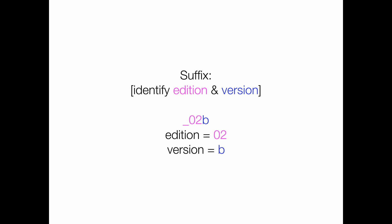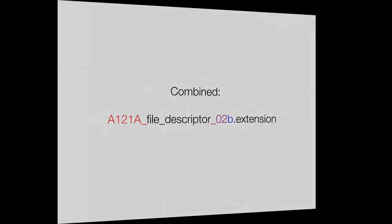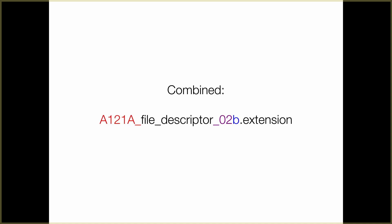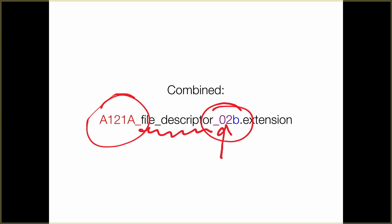If you want to just stick with numbering, that's cool too. It's a way of keeping track of that iterative process that design is inherently doing. So putting it all together: you'd have the prefix in the front, whatever you want to call the file in the middle, and then at the end you have the addition number and the version letter to designate that iterative process.